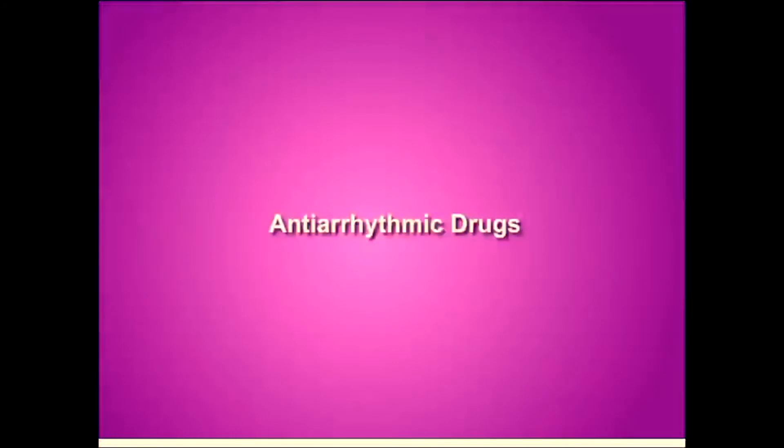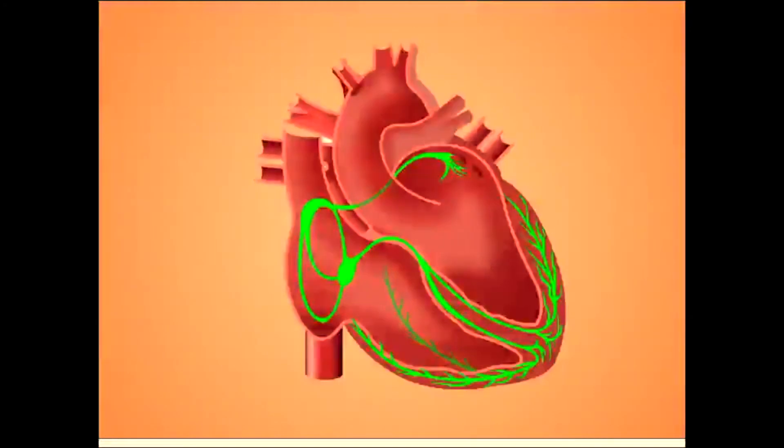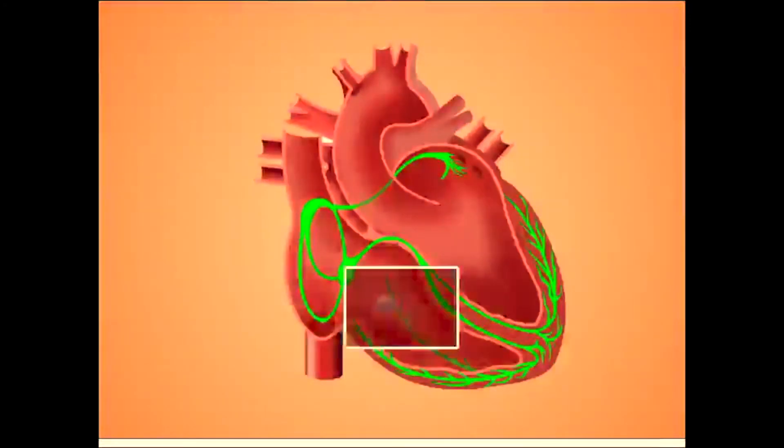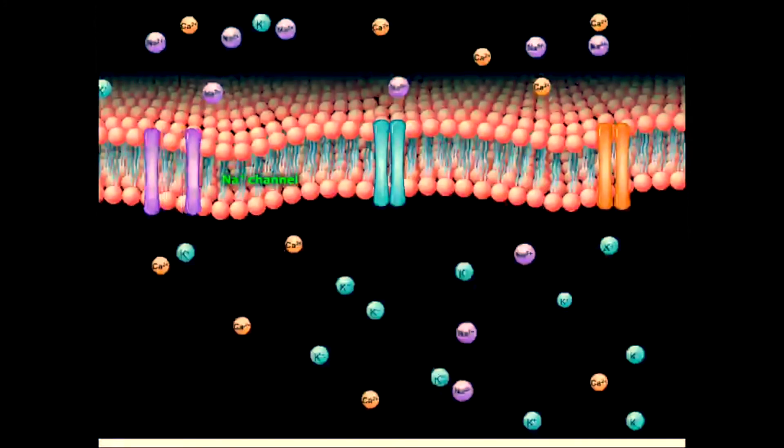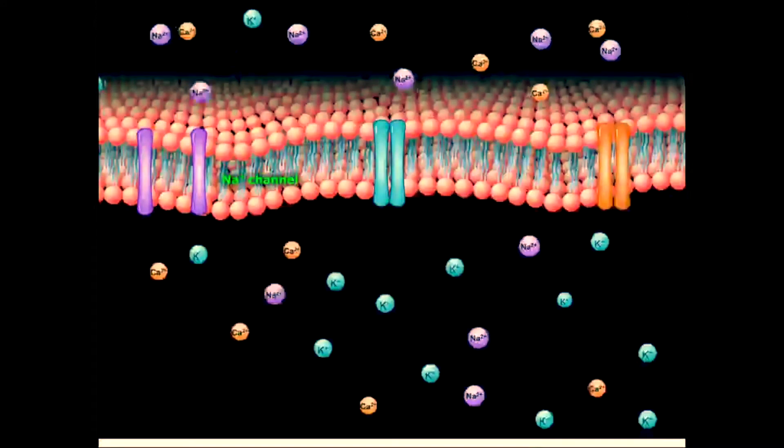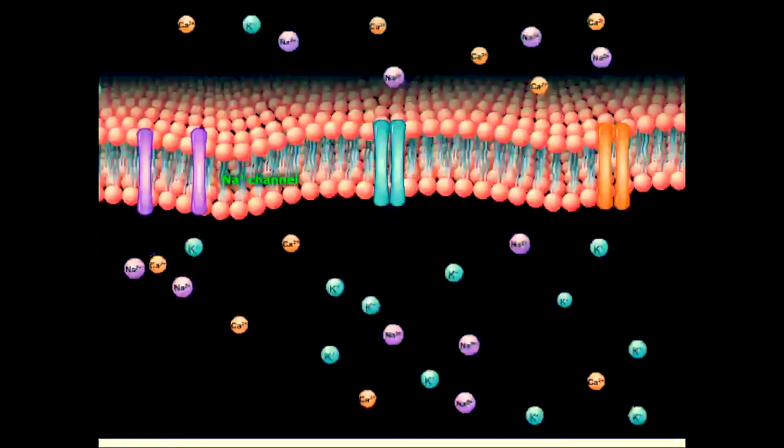Antiarrhythmic drugs are used to restore normal rhythm and conduction. They directly or indirectly alter membrane ion conductance, thus altering the physiology of cardiac action potentials. We will first review the class 1 antiarrhythmic drugs. Let's take a closer look at the ventricular wall and zoom in on a cardiac cell. Sodium channels open during phase 0 to allow influx of sodium into the cell, resulting in depolarization.